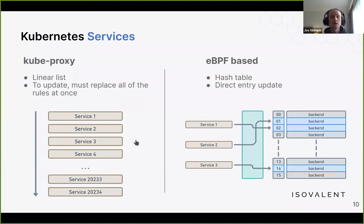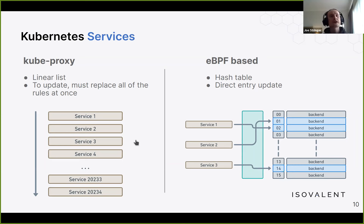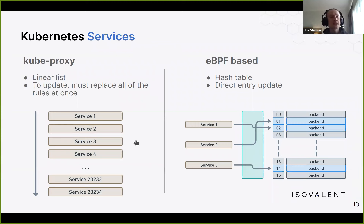Cilium uses eBPF to implement the same functionality using hash tables. Instead of iterating through all services, we hash the service IP address and go directly to a back-end — just one hash table lookup and one map lookup. There's even the possibility to do this per-CPU so multiple CPUs looking up the same back-ends simultaneously don't contend with each other.